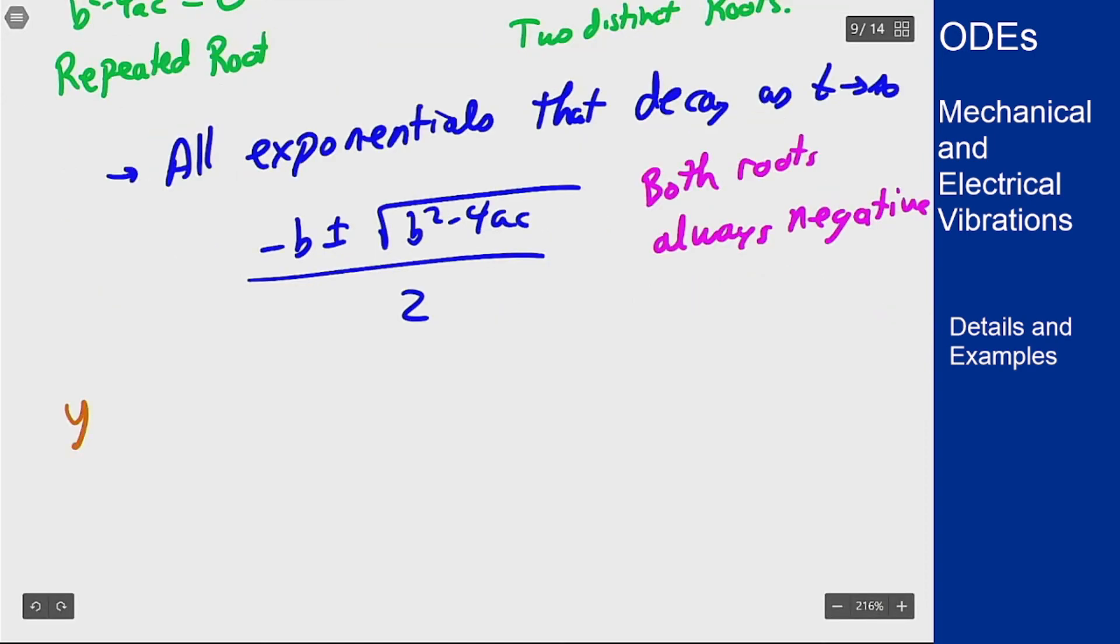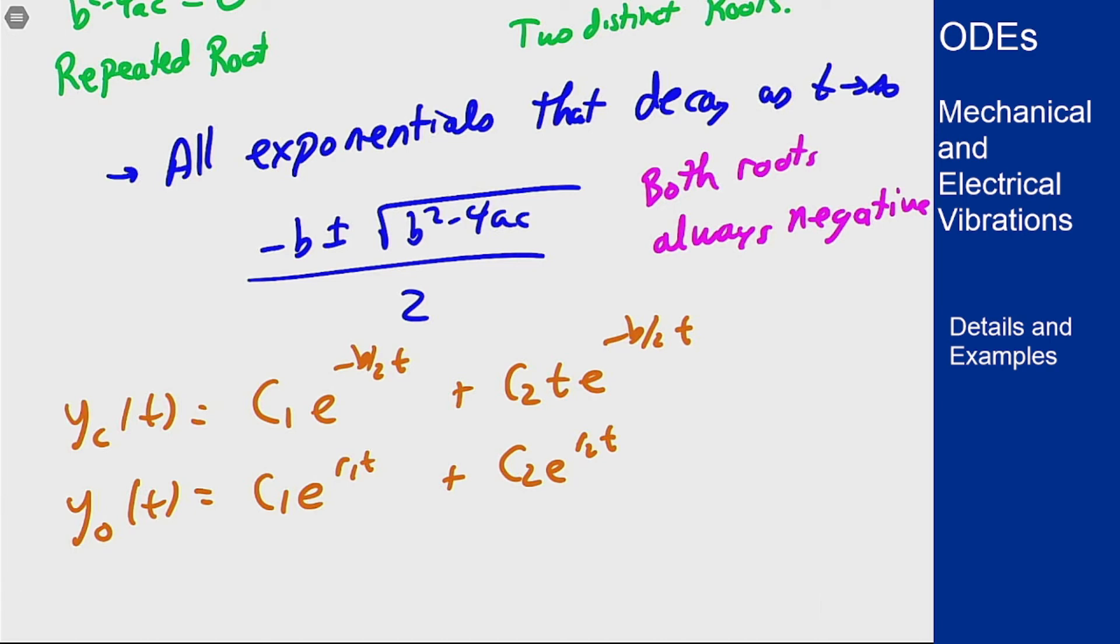So for critically damped y_critical we get a general solution of the form c₁e^(-bt/2) + c₂te^(-bt/2) and for y_overdamped we're going to get c₁e^(r₁t) + c₂e^(r₂t) for the two different roots that we get from this setup. And these are all exponentials, they're all going to decay to 0 relatively quickly as t gets bigger.